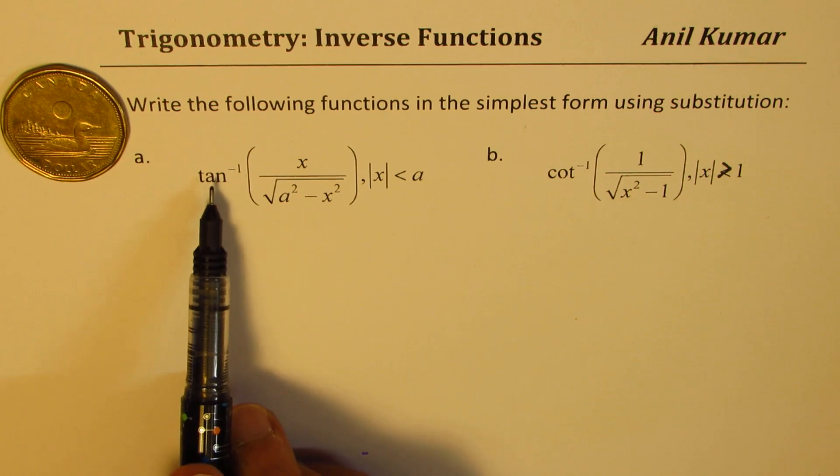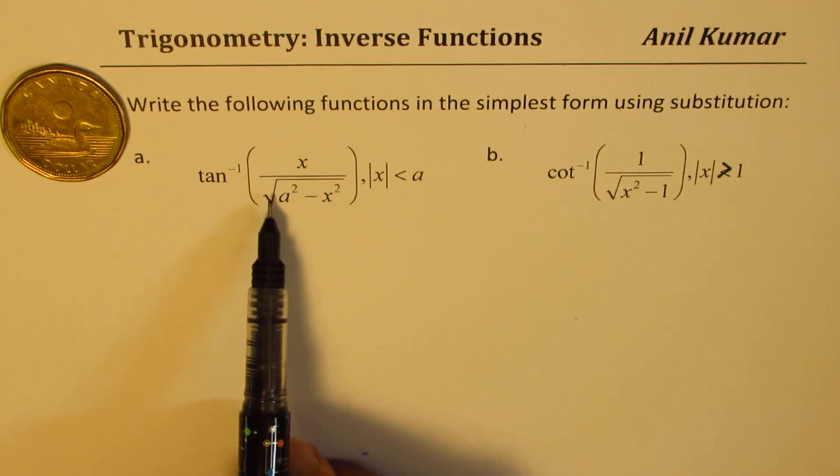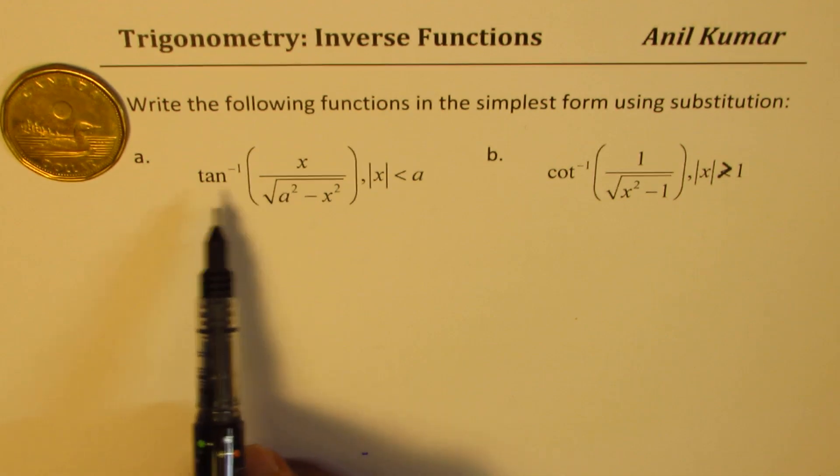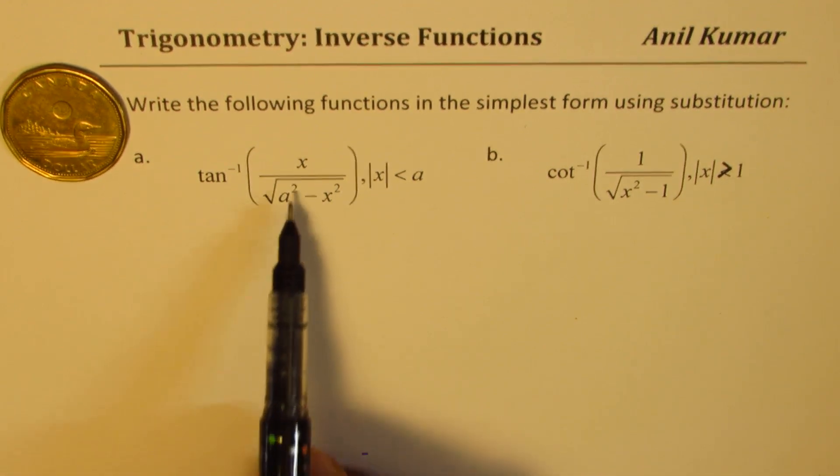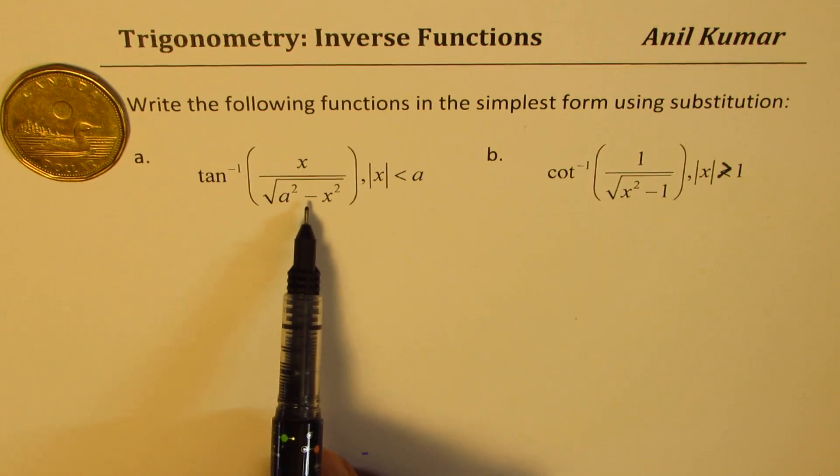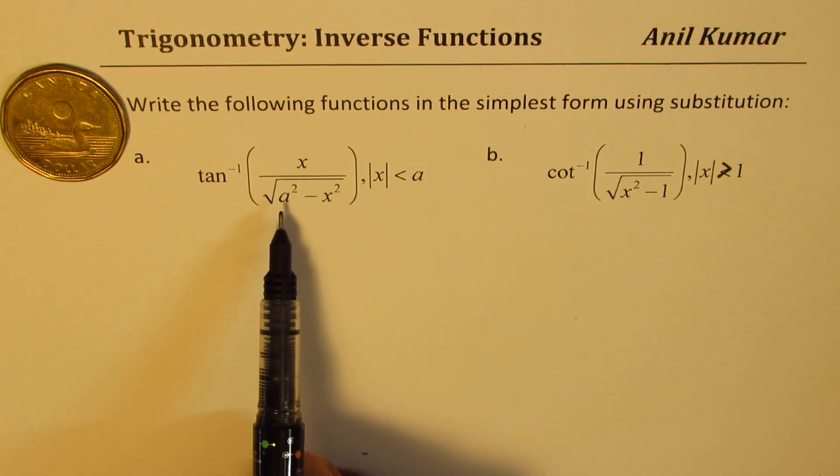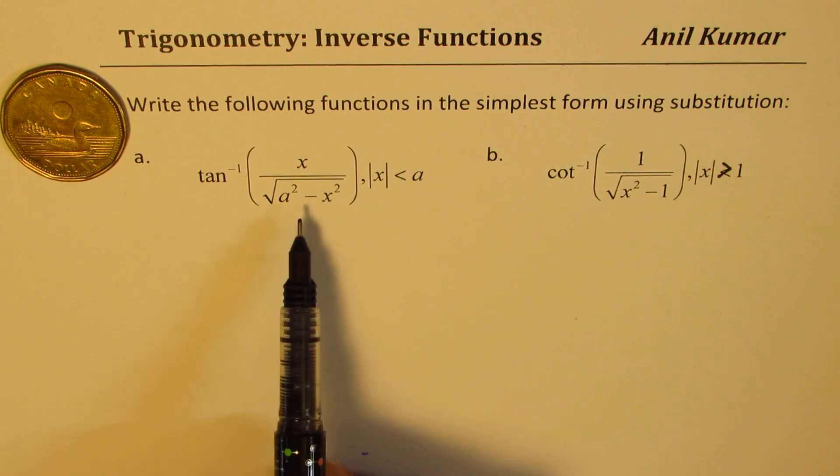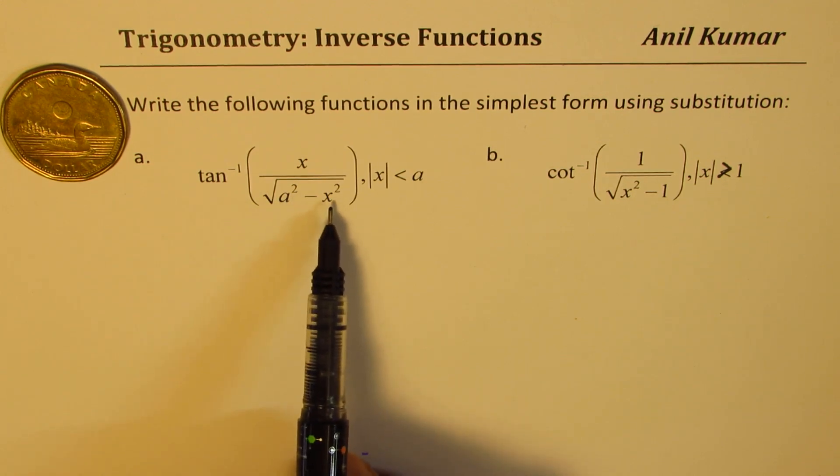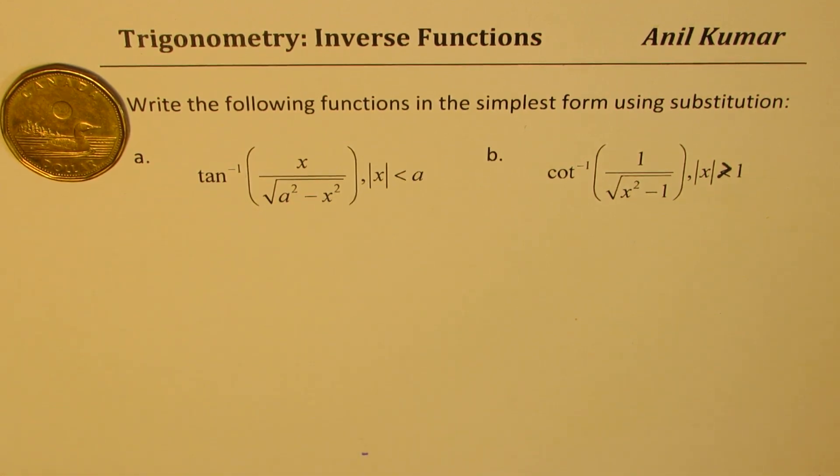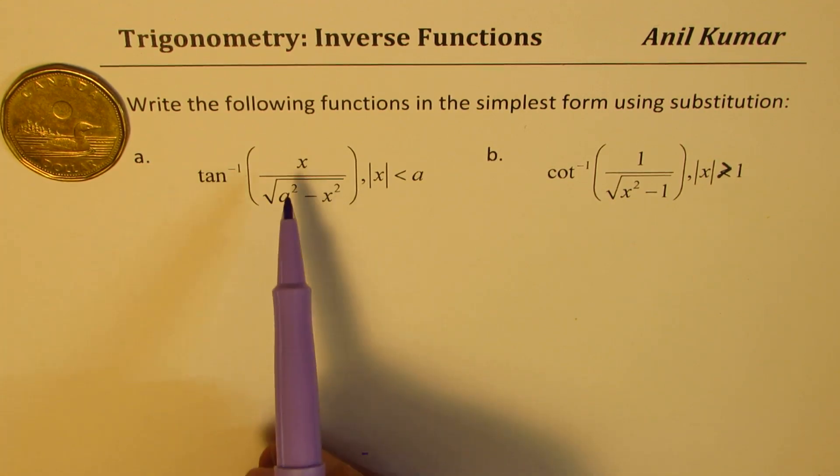When we have tan inverse of something, if I get tan inside, then tan inverse of tan will just give us the angle. Second, we have a square minus x square within square root. So you remember something like a constant, 1 minus cos square x is sin square x, 1 minus sin square x is cos square x. So that reminds us for a substitution.